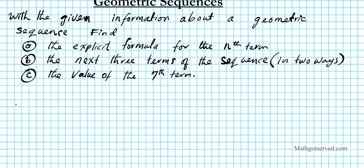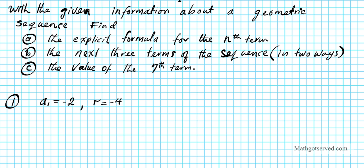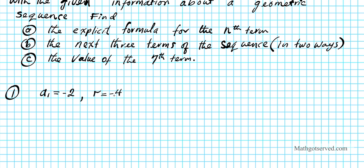Let's start with part one. The information we have is a1 equals negative two, and r, the common ratio, is negative four. We know this is a geometric sequence because we have a common ratio — if it were a common difference d, it would be arithmetic. The explicit formula for the nth term is: an equals a1 times r raised to n minus one.